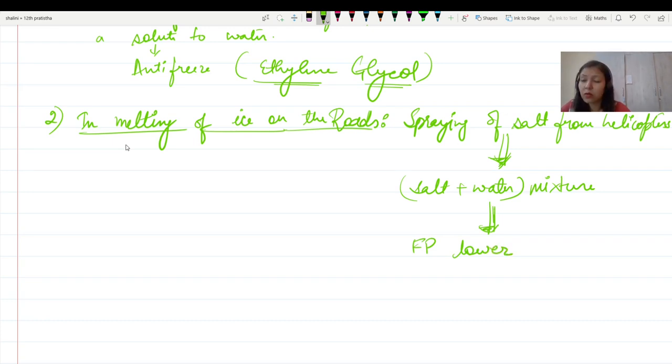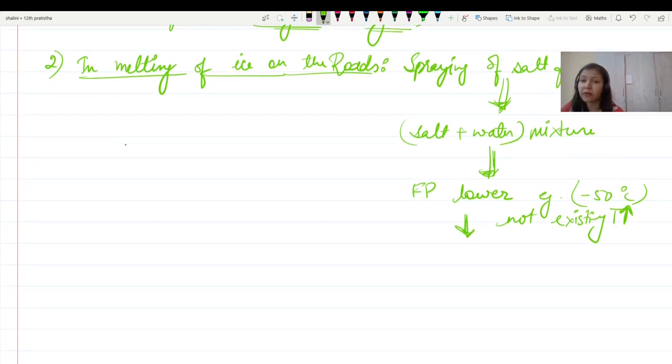For example, suppose minus 50 degrees. This temperature will not exist in the environment. So what will happen? The ice will start to melt. The snow begins to melt.